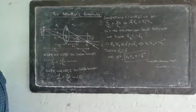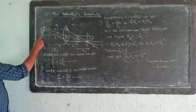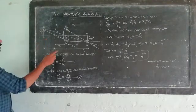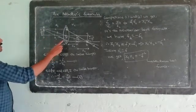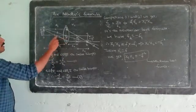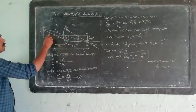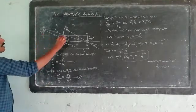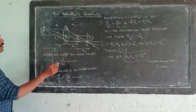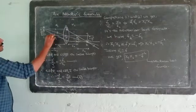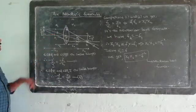Now, here is O, A, F1, and the second focus is C. We can see the two triangles. We can see the right angles. The right angles are opposite angles.